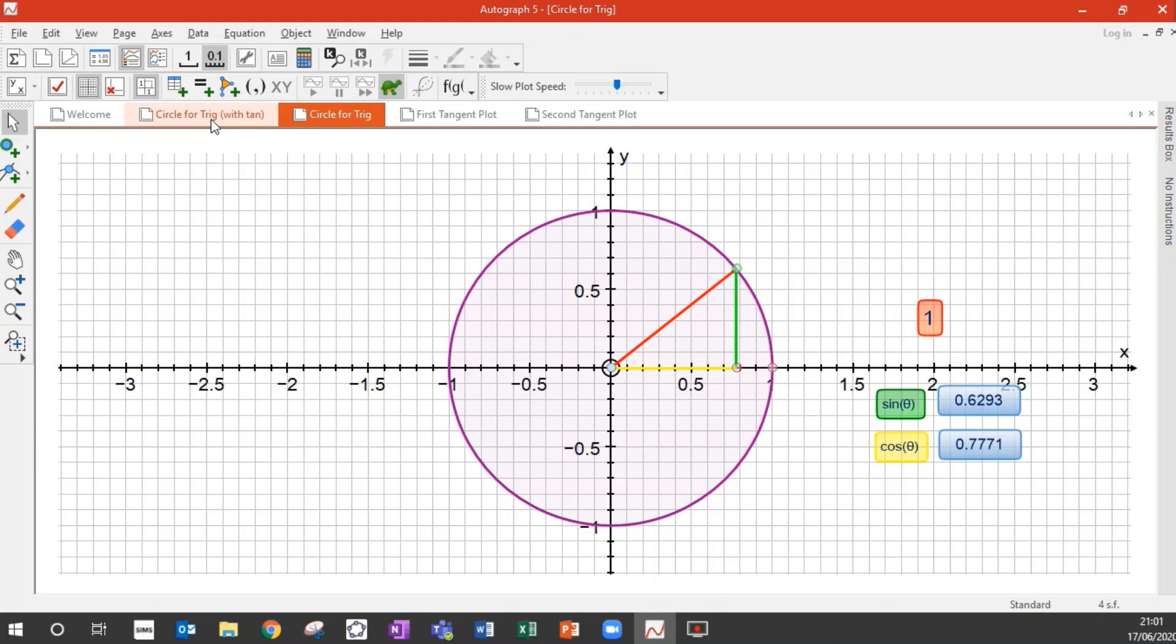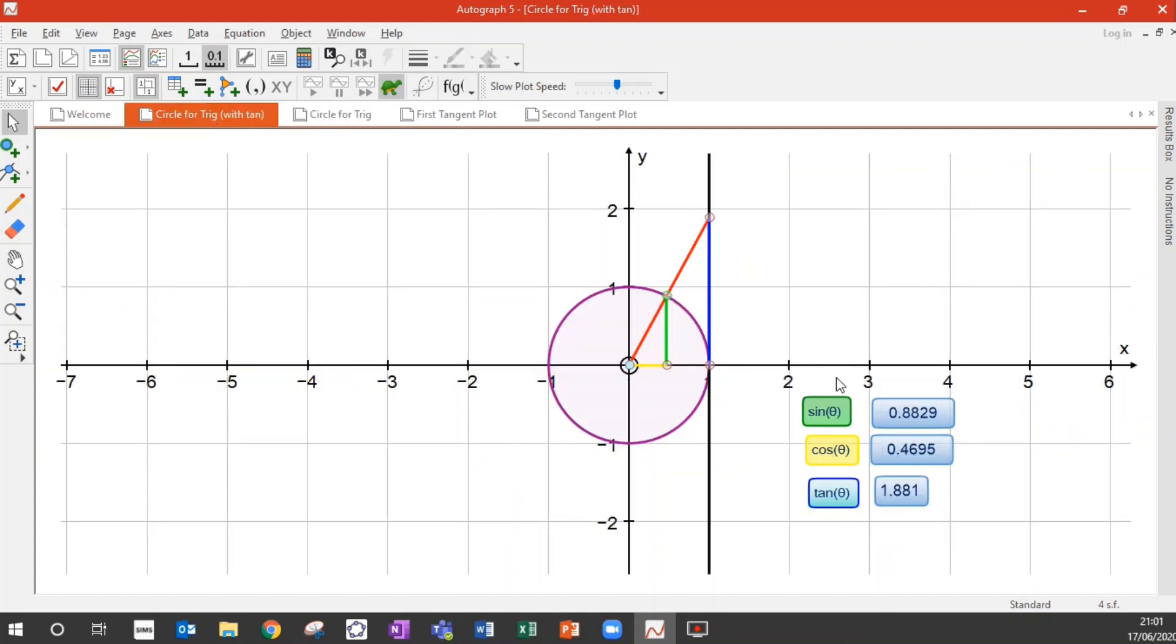And we used that to talk a bit more about sine and cos. Because in particular, we used it to extend our definition to bigger angles. And eventually, we extended our definition to all possible angles. Now, all I've done to this picture is I've added a couple of new lines. So firstly, I've added this black line here. This black line is a vertical line. It touches here. So this is the line x equals 1.